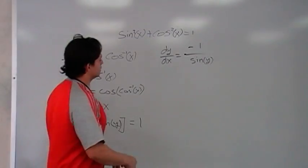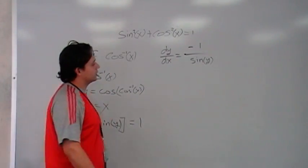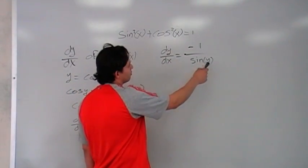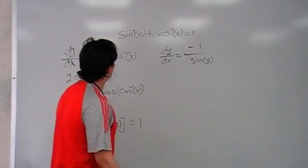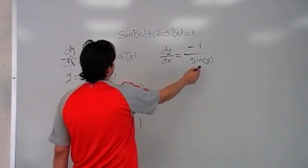Alright, so pretty much this is the derivative of the arc cosine, but there's a little problem like the other time, you have y. So, we're going to use our trigonometry equation to find sin.